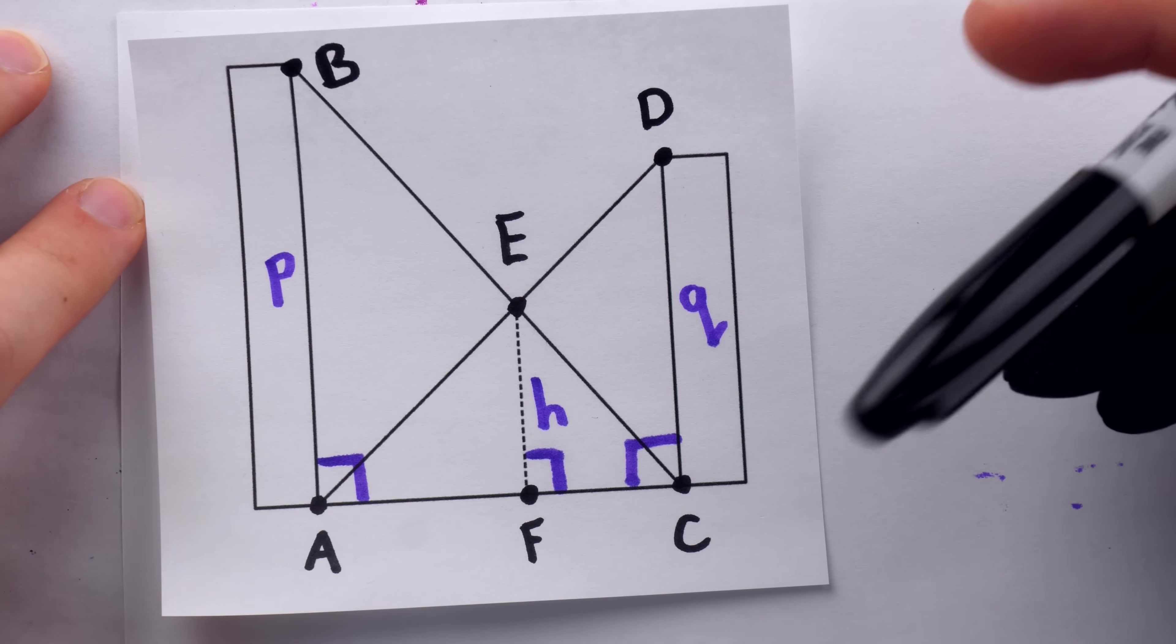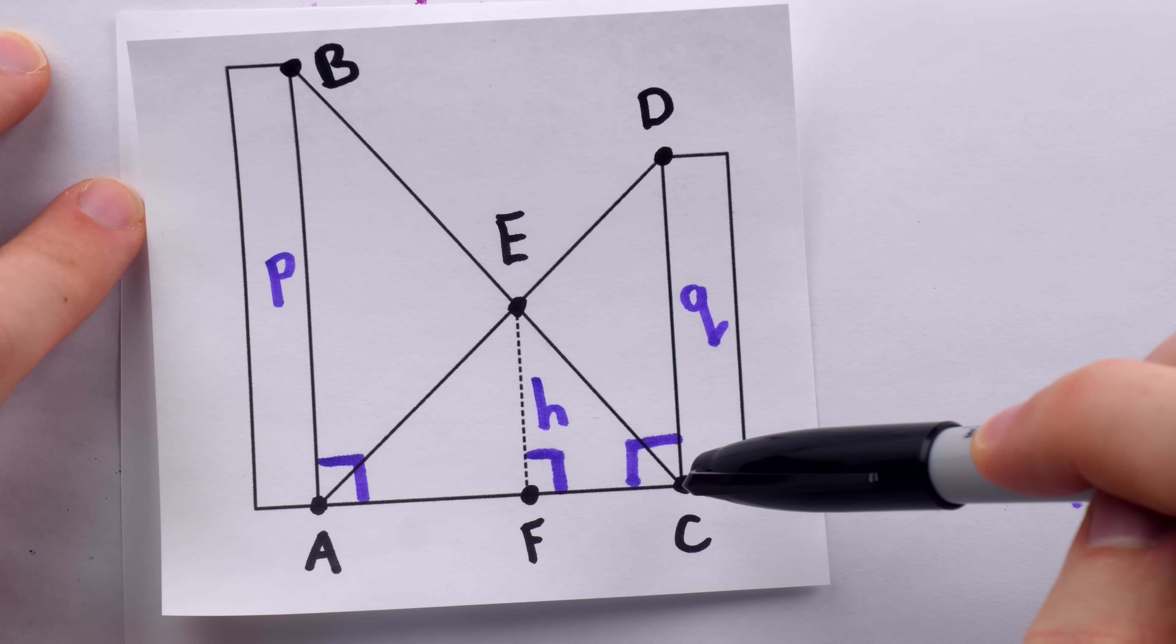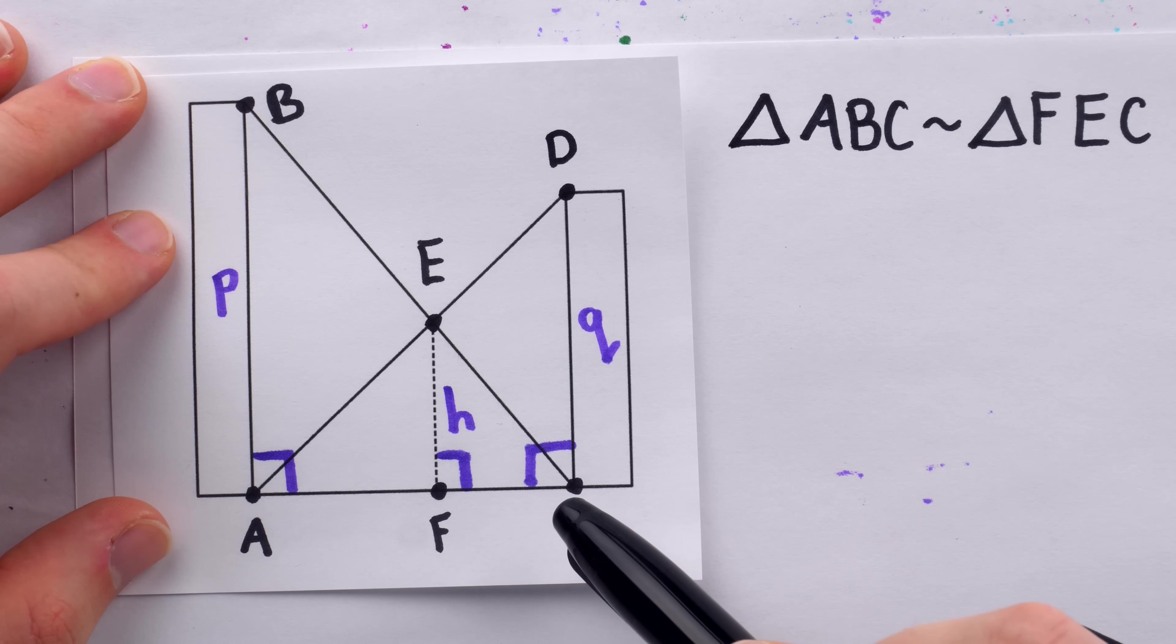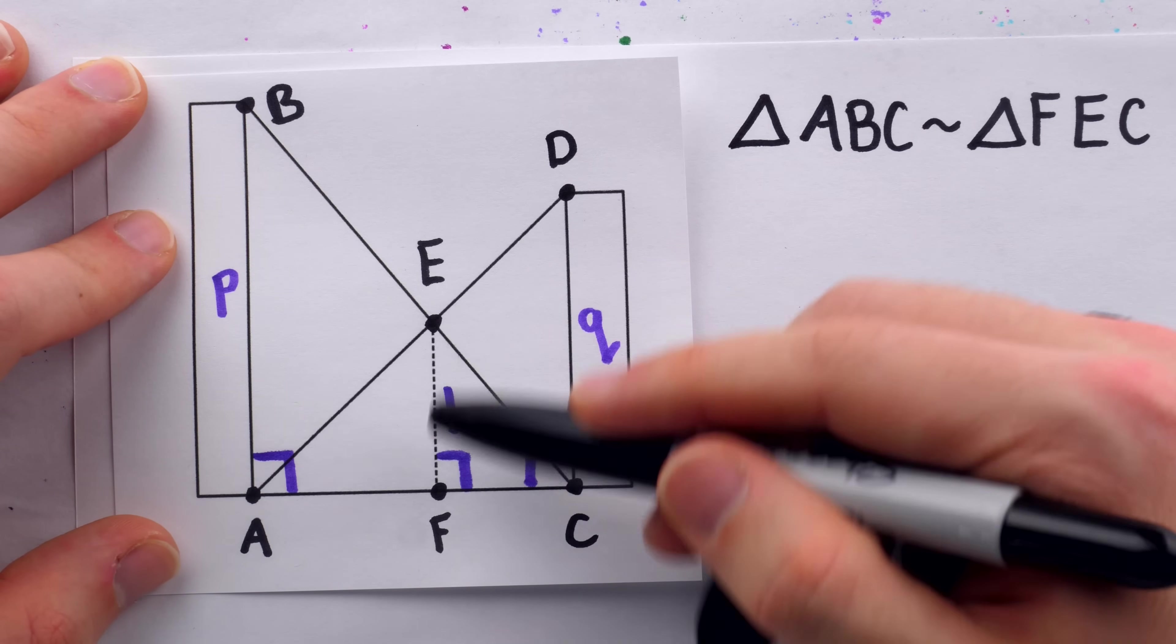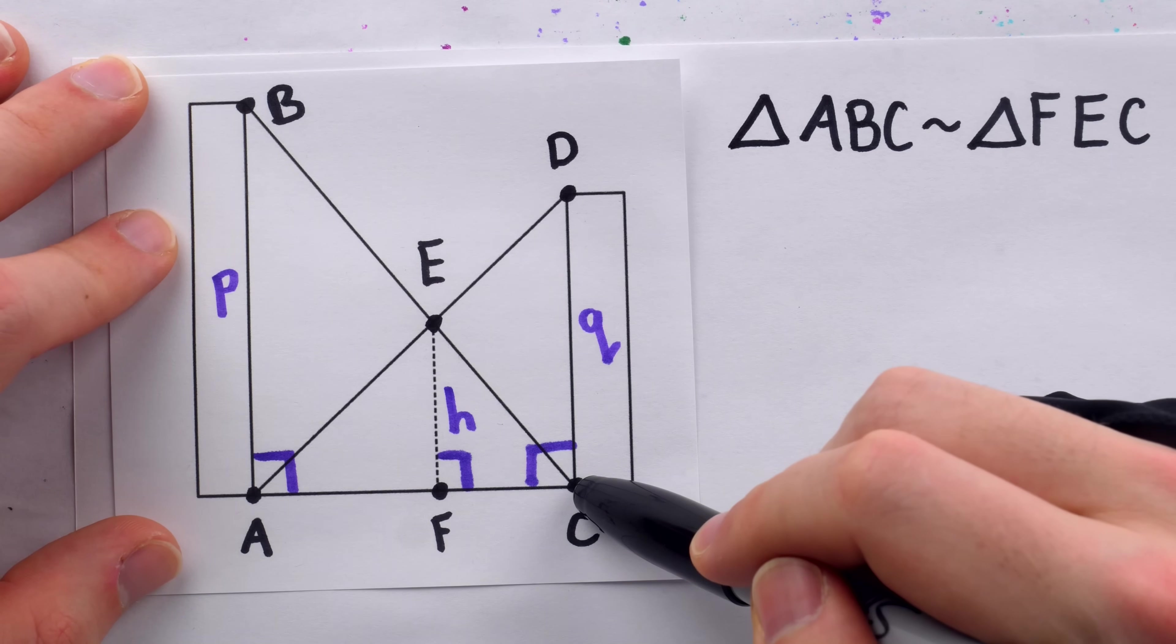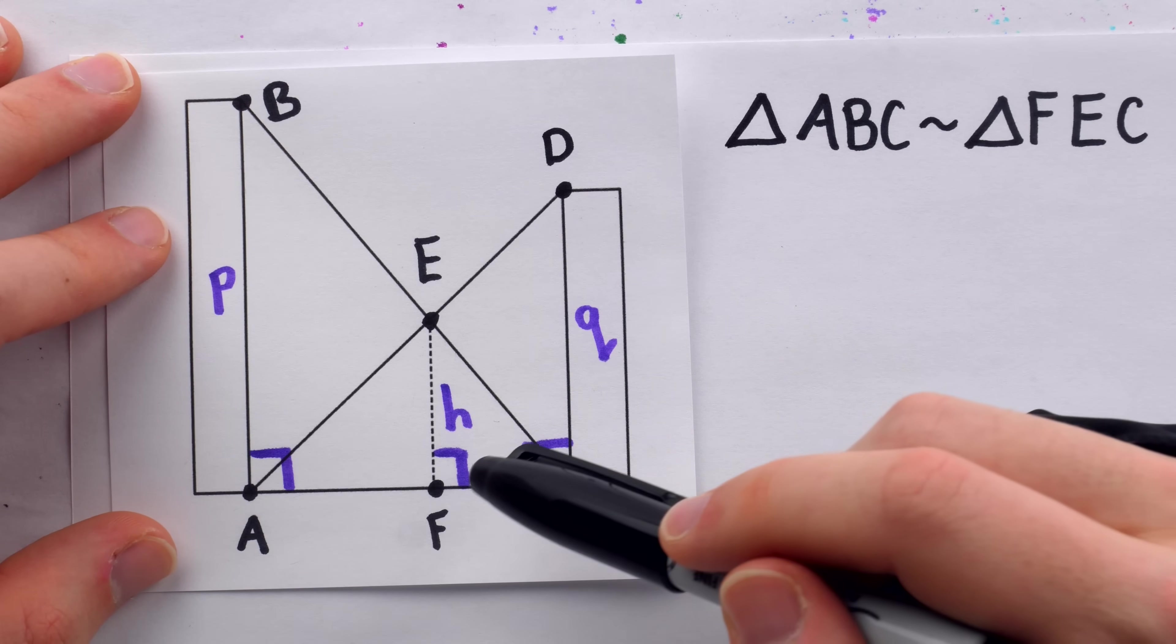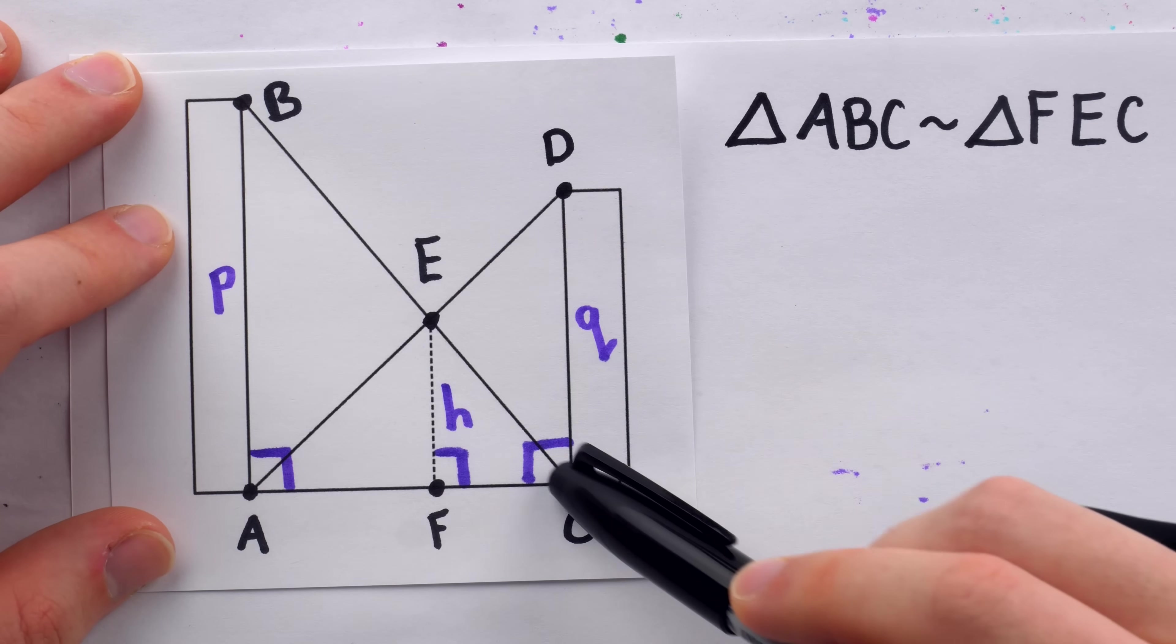Triangle ABC must be similar to triangle FEC. We know triangle ABC is similar to triangle FEC, because FE is a segment that joins this side of ABC to this side of ABC, and it's parallel to that third side, AB. So anytime that happens, a similar triangle is cut out of that bigger triangle.